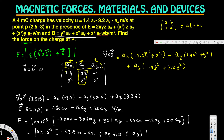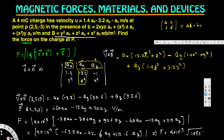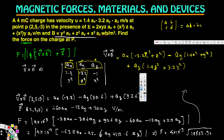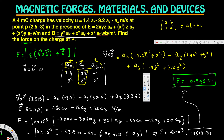To find the magnitude, we compute the square root of (63.8² + 42.6² + 112.6²) which equals √1856, then multiply by 4×10⁻³. The final answer is F equals 0.545 newtons — that is the force on the charge at point P.